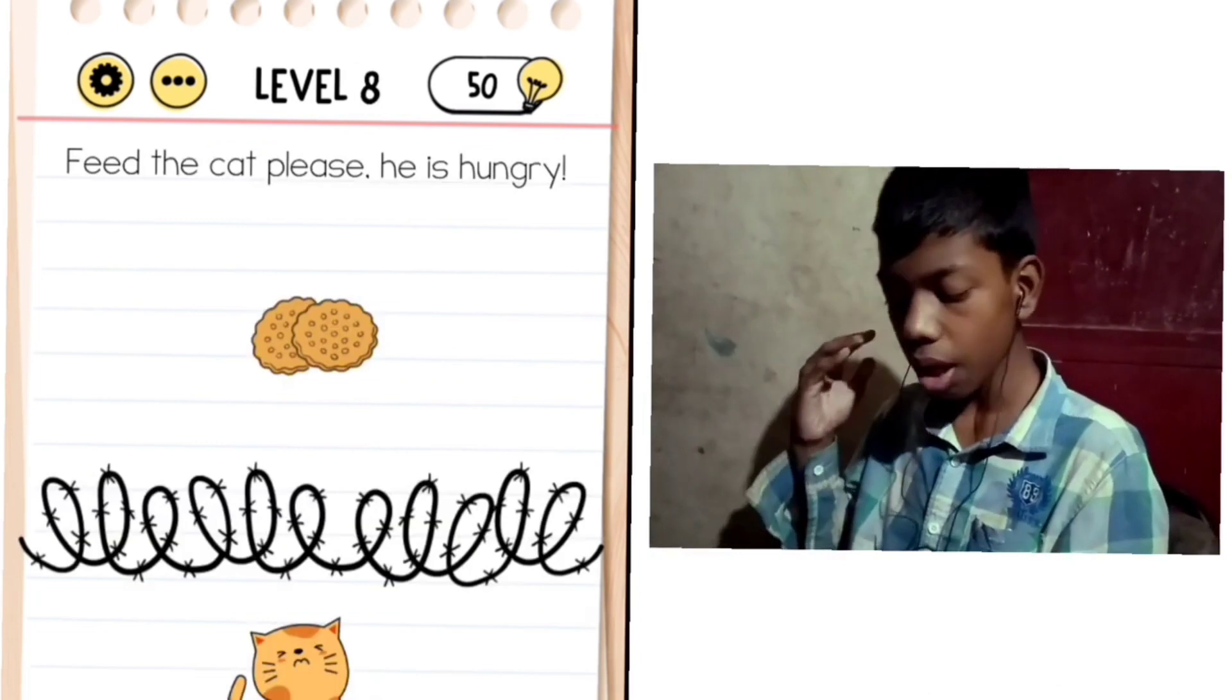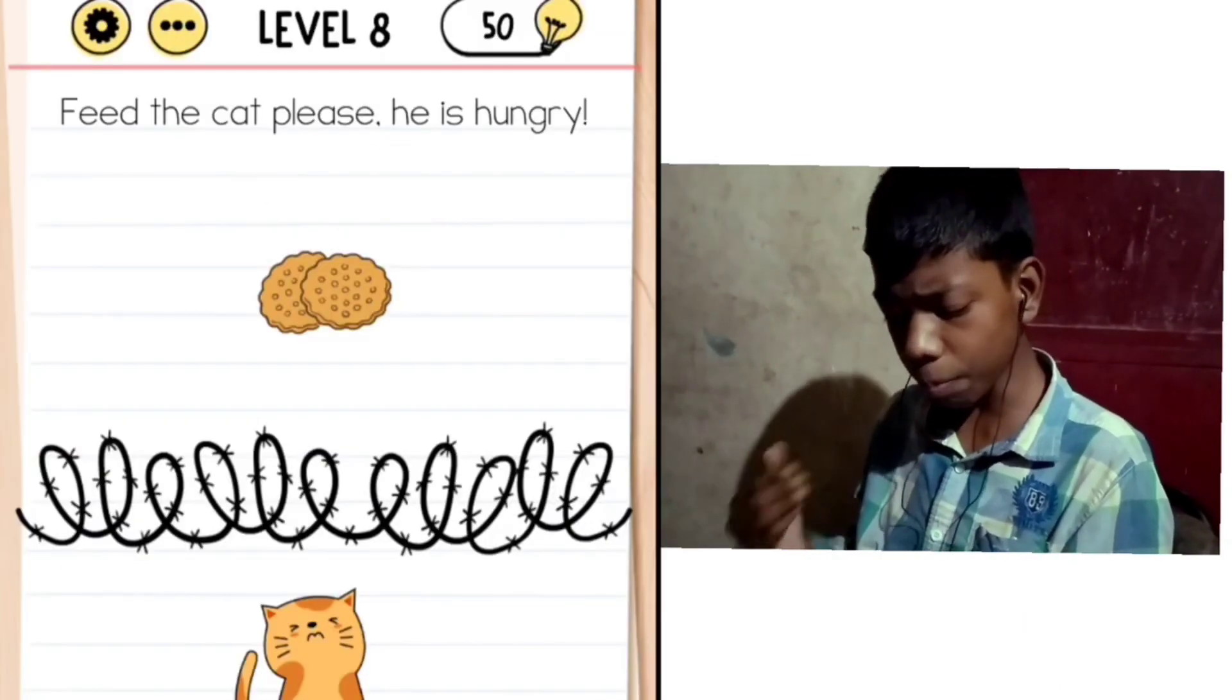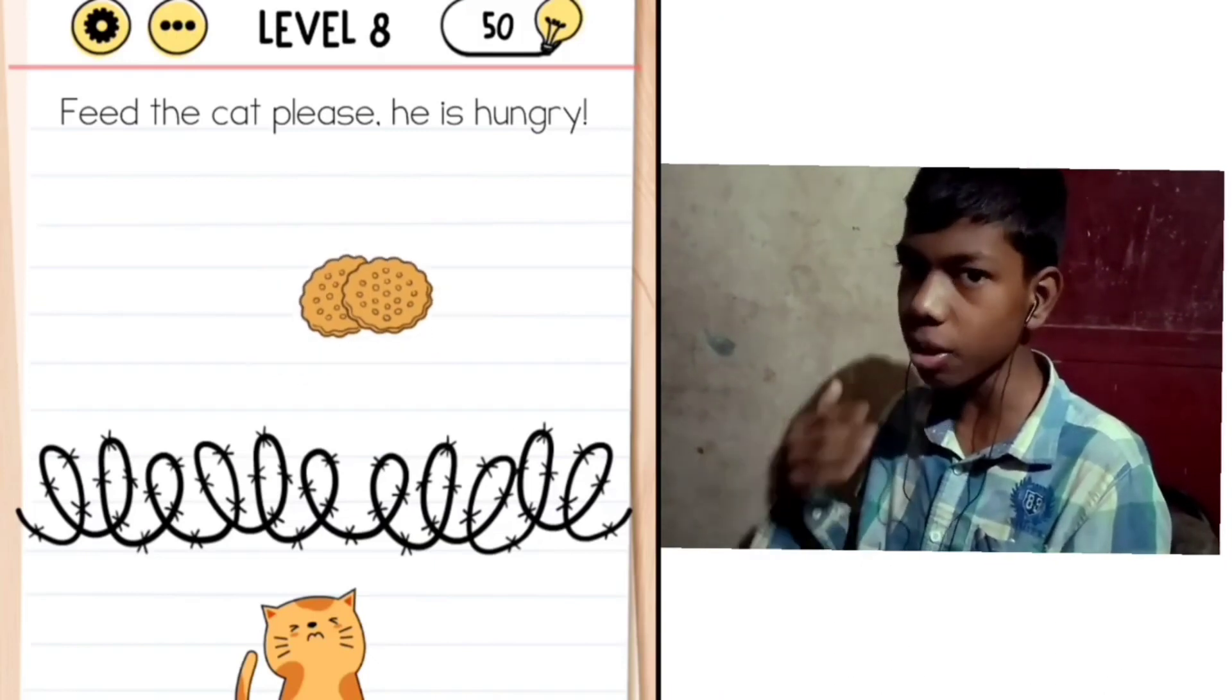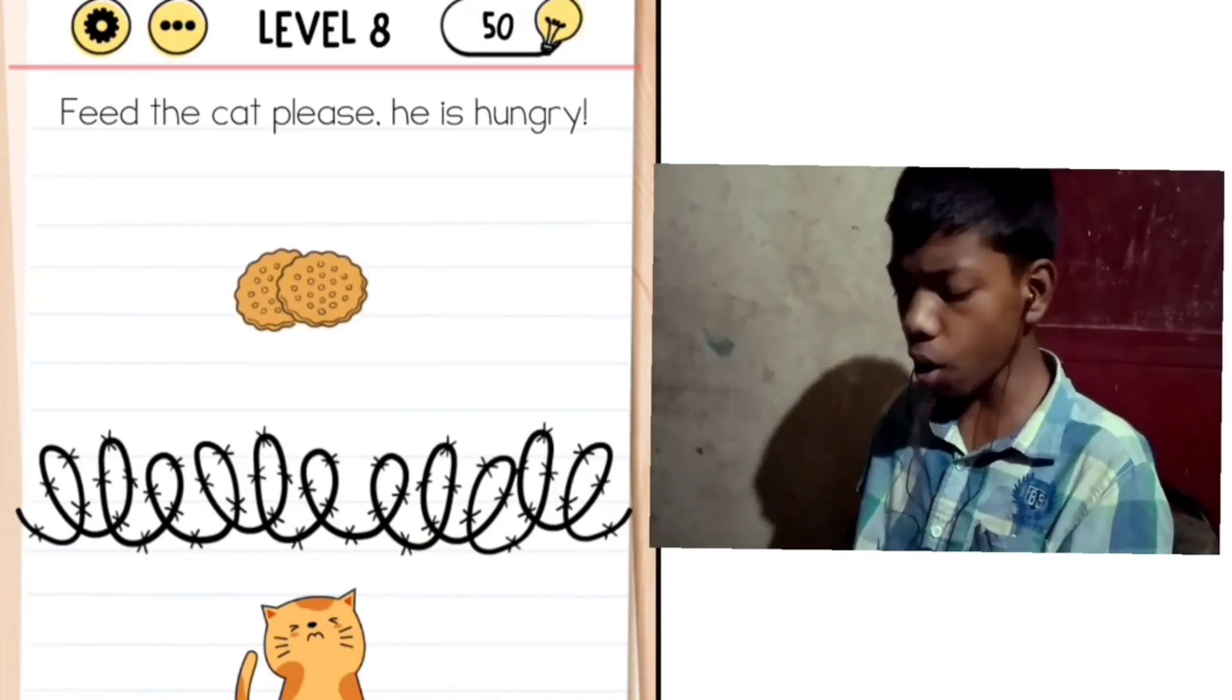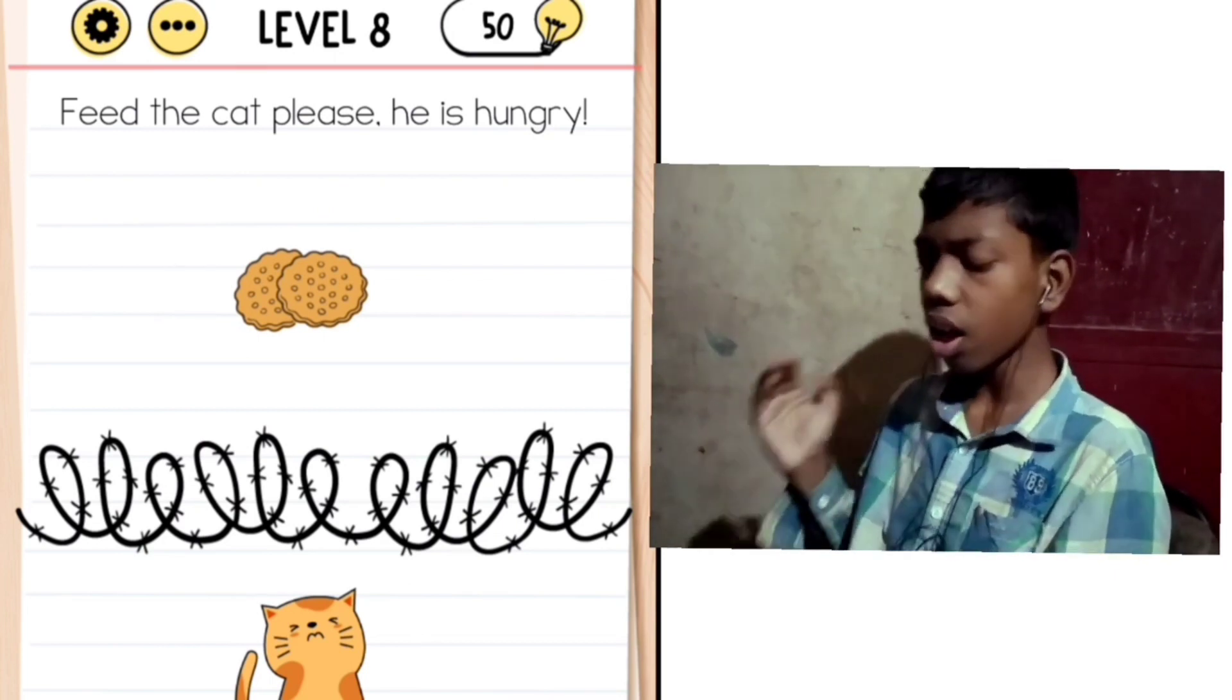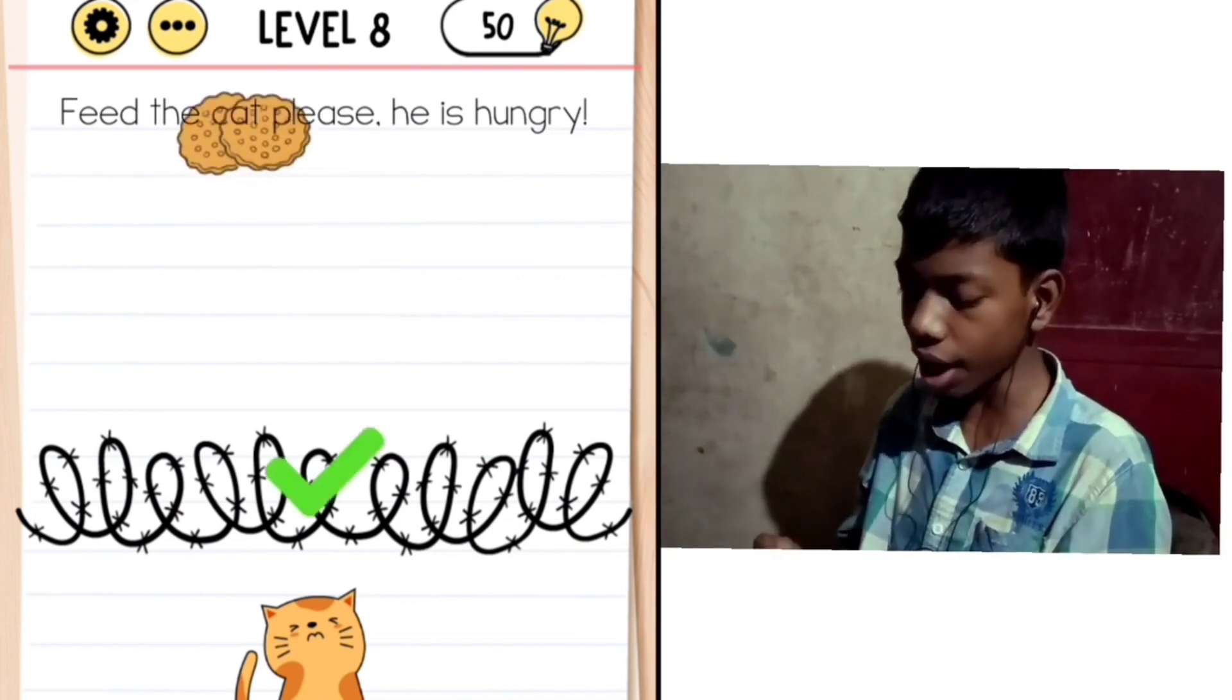Level 8: Feed the cat please, he is hungry. Here we have a cat who is hungry. In the picture we have cookies and a boundary line. How do we get past the boundary? If we move the line, we can give the cookies to the cat. Yes guys!